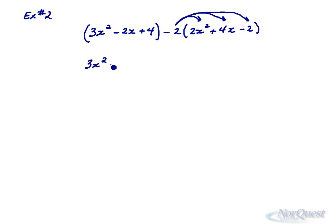3x² - 2x + 4. And now multiply everything in the second polynomial by negative 2 to give us -4x² - 8x + 4. And now we're at the stage where we can collect like terms. 3x² - 4x² gives us -x². Negative 2x - 8x gives us -10x. 4 + 4 + 8.